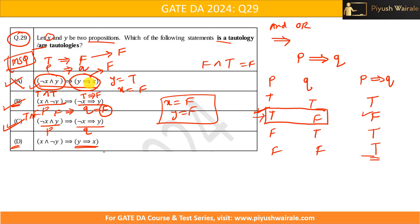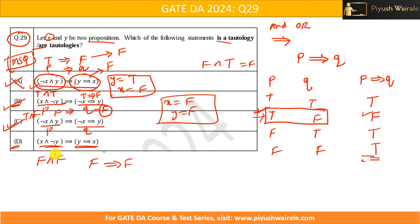For option D, y implies x becomes false when y is true and x is false. Checking: x is false and negation of y is false, so false AND false = false. False implies false is true. So for this scenario also we get true for all combinations — option D is also a tautology.